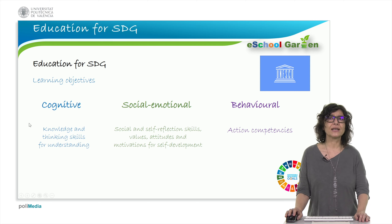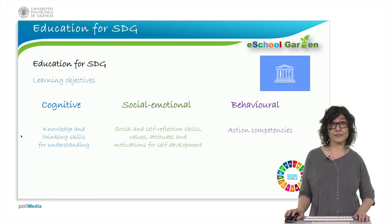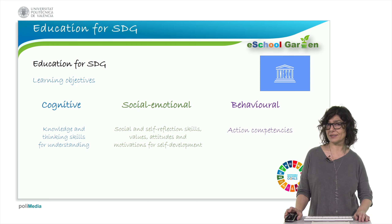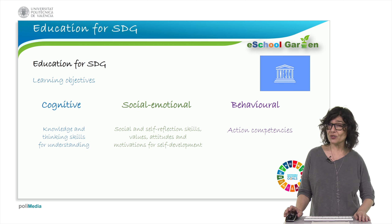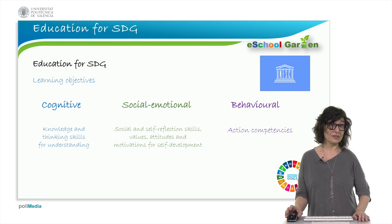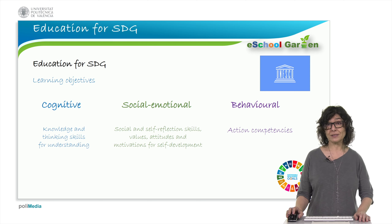Education for SDGs can develop cross-cutting competencies and specific learning outcomes focused on a particular SDG. The learning objectives are organized into three blocks or domains: the cognitive, the social-emotional, and the behavioural. The cognitive domain comprises knowledge and thinking skills necessary to better understand the SDG and its challenges. The socio-emotional domain includes social skills that enable learners to collaborate, negotiate and communicate to promote the SDGs, as well as self-reflection skills, values, attitudes and motivations that enable learners to develop. The behavioural domain describes action competencies.